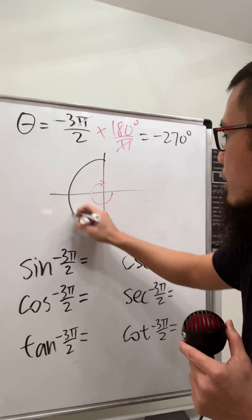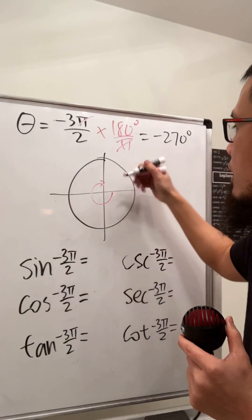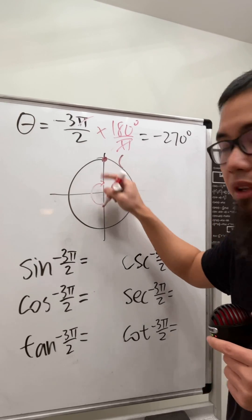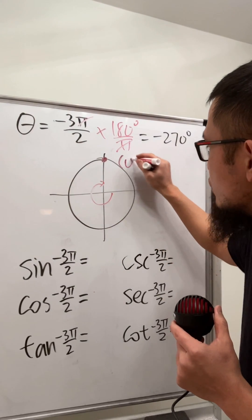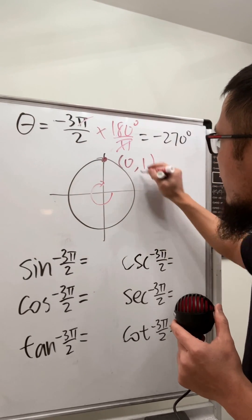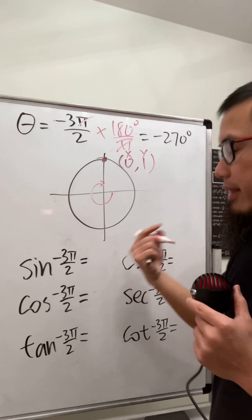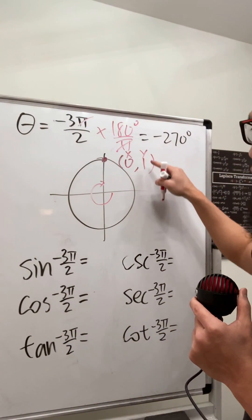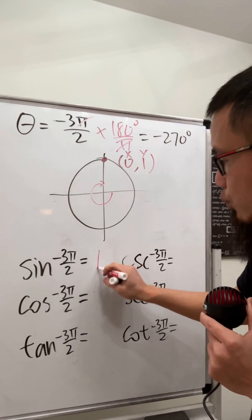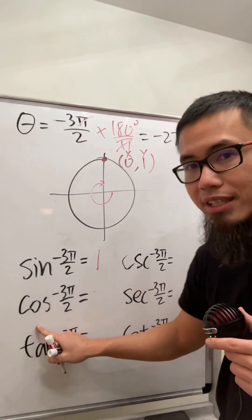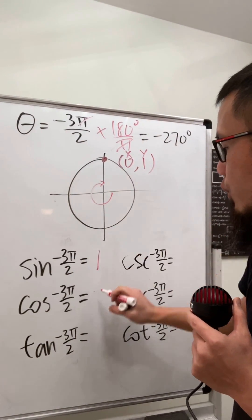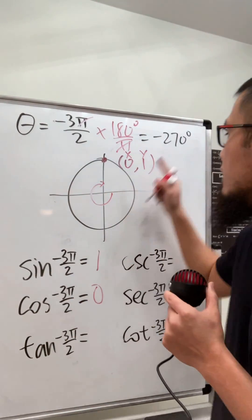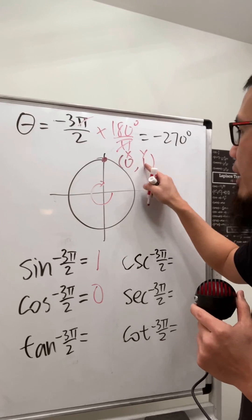We put the point on the unit circle — the coordinate is (0, 1), where 0 is the x-value and 1 is the y-value. Sine is the y-value = 1. Cosine is the x-value = 0. Tangent is y over x = 1 over 0, which is undefined.